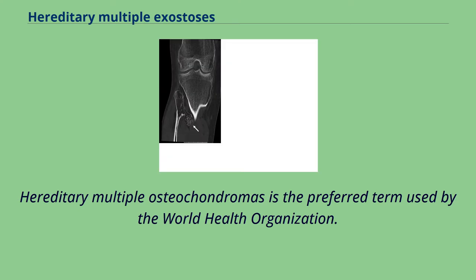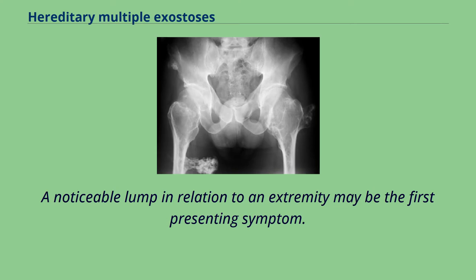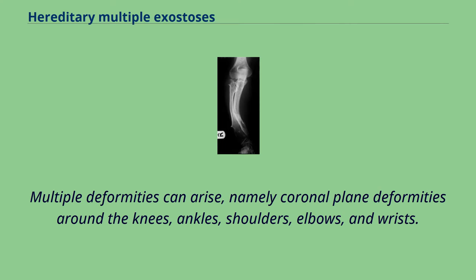Hereditary multiple osteochondromas is the preferred term used by the World Health Organization. A noticeable lump in relation to an extremity may be the first presenting symptom. Multiple deformities can arise, namely coronal plane deformities around the knees, ankles, shoulders, elbows, and wrists.